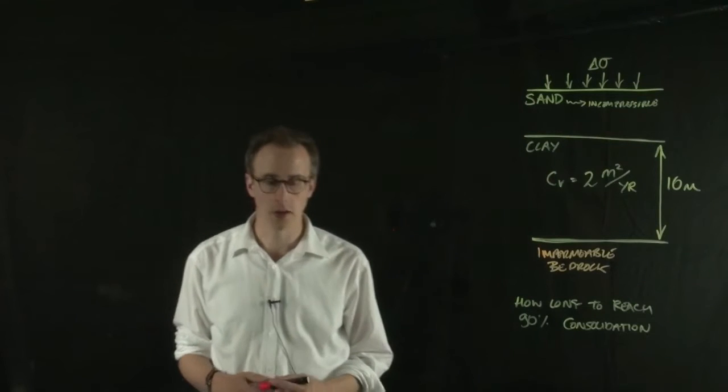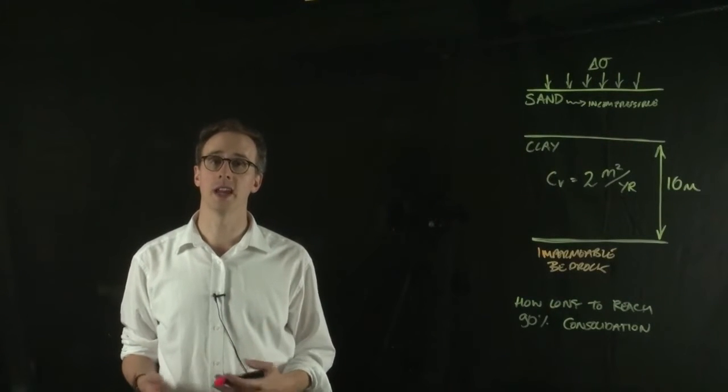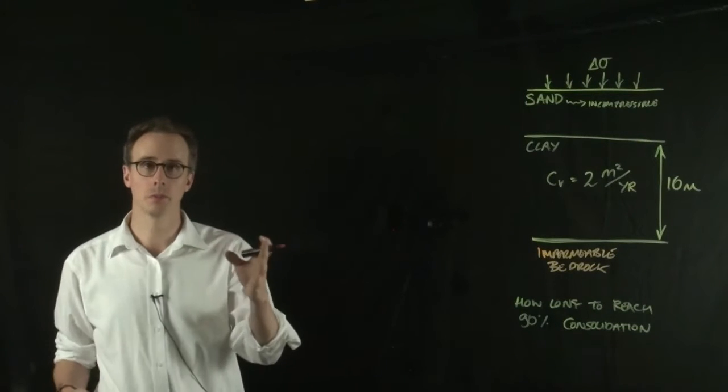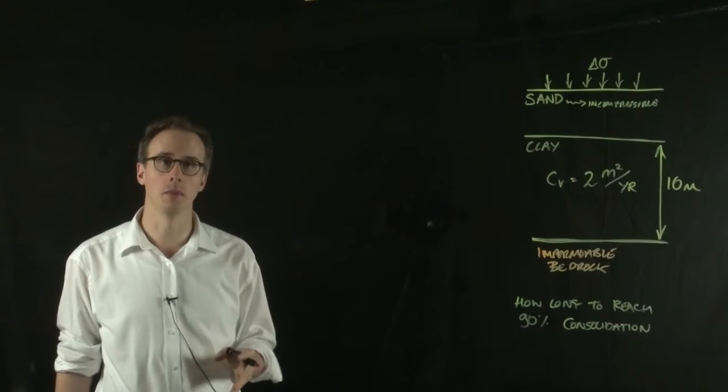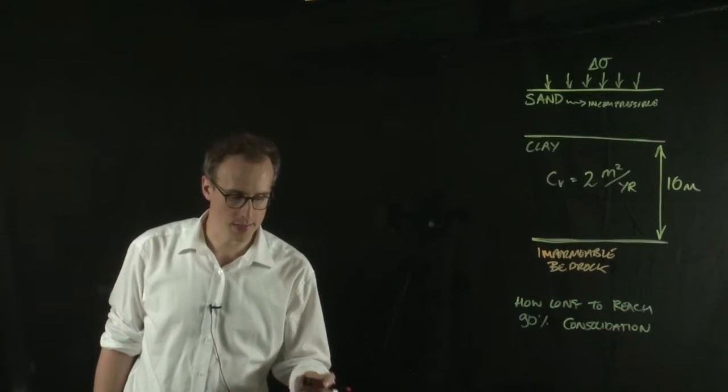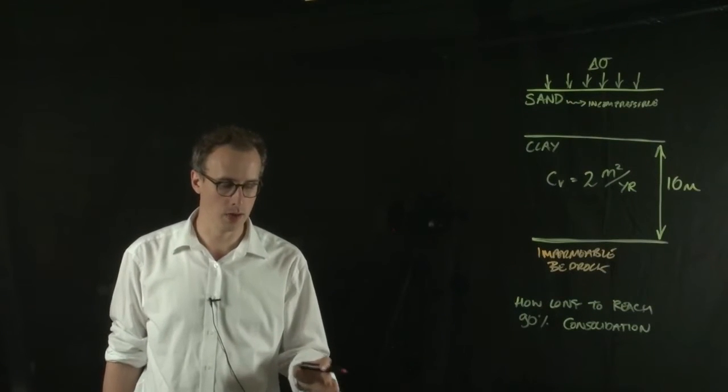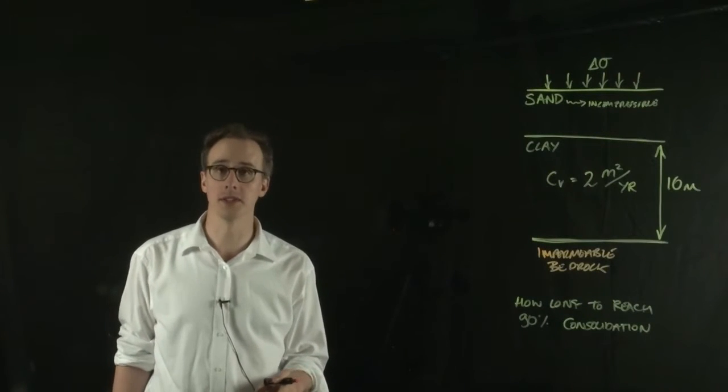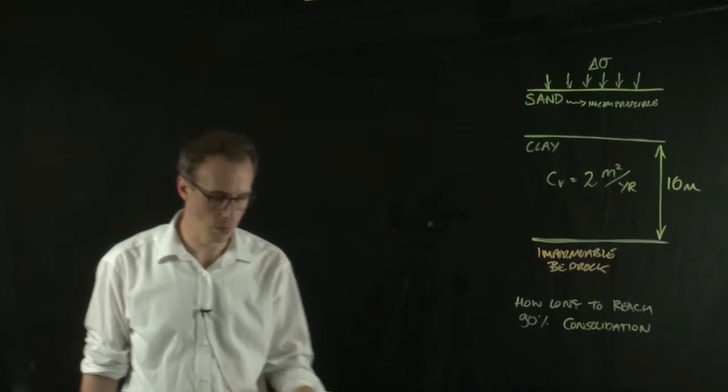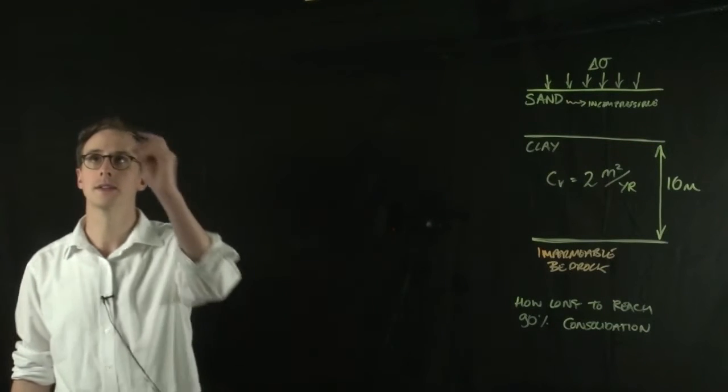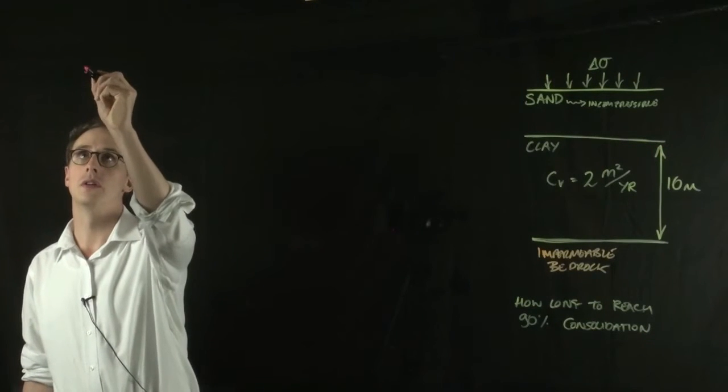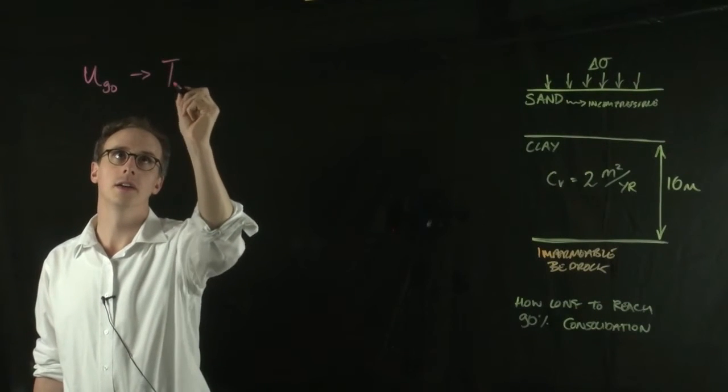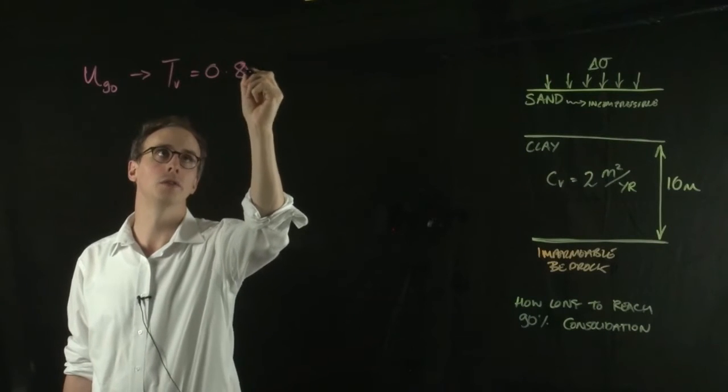Now, you can use an equation or a table to derive that, but if you look at the table, and I've put a link to the table on my website, you can see that the relationship between U and TV for U equals 90% gives us a TV value of 0.848.